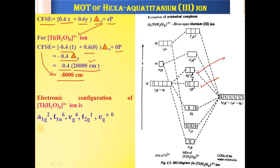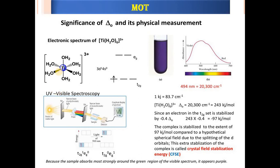The overall electronic configuration of [Ti(H₂O)₆]³⁺ from low energy to high energy is: A1G², T1U⁶, EG⁴, T2G¹, with no electrons in EG*. Regarding the electronic spectrum of [Ti(H₂O)₆]³⁺: titanium is surrounded by 6 water ligands, with one electron in T2G and empty EG orbitals. When [Ti(H₂O)₆]³⁺ absorbs light near 494 nm (approximately 20,300 cm⁻¹), an electronic transition occurs.